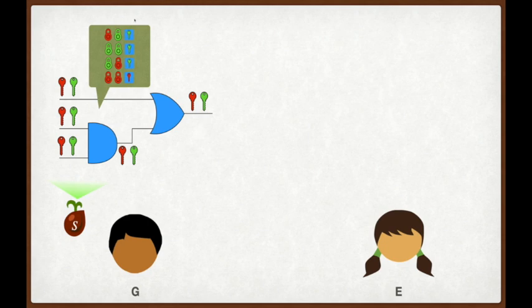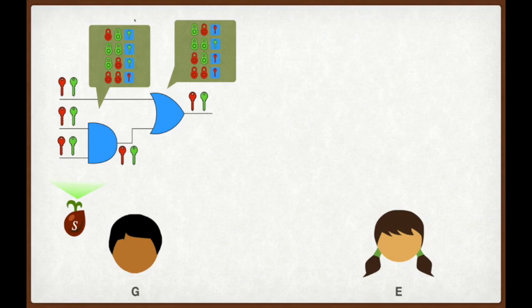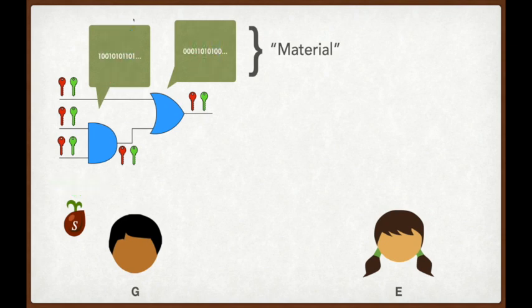So for example, in this particular gate, if the evaluator E obtains two input red keys, then she should obtain an output red key. And in all other cases, she should obtain an output green key. So this would encode a logical OR gate. The generator continues to step through the circuit gate by gate, constructing encryptions of each of the logical gates until he has completed encrypting the entire circuit. We refer to these encryptions of the gates as the garbled circuit material. For the purposes of this talk, I'd like for you to think of this material as nothing more than a pseudorandom string.